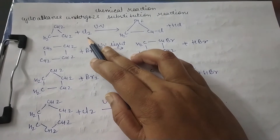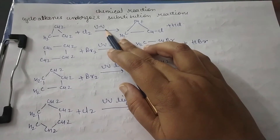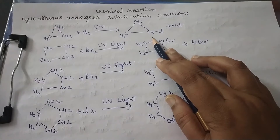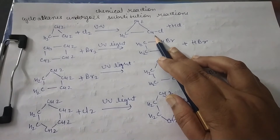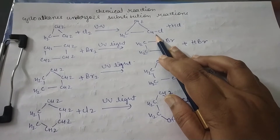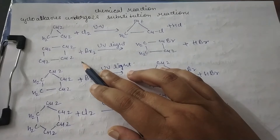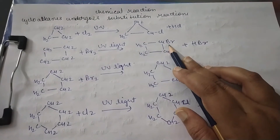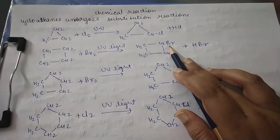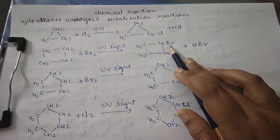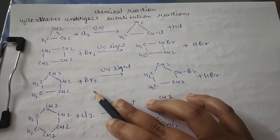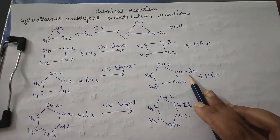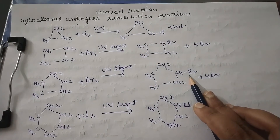Here you can see chlorination occurs in the presence of UV light, and one chlorine is substituted on a carbon, replacing a hydrogen. Another example: cyclopropane reacts with bromine and one hydrogen is replaced with bromine. Similarly for cyclopentane, one bromine molecule is substituted in place of hydrogen.